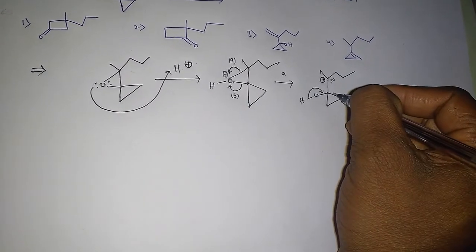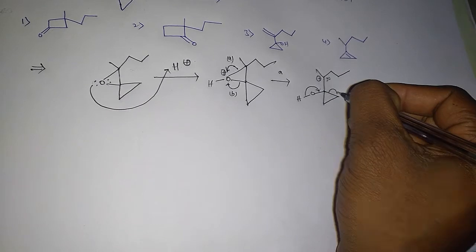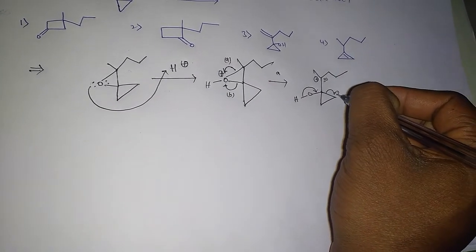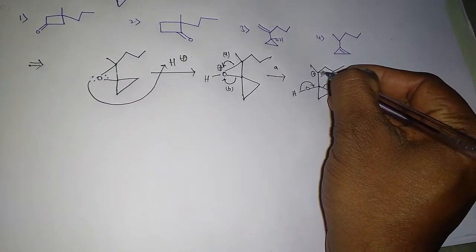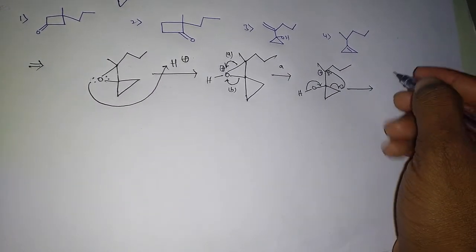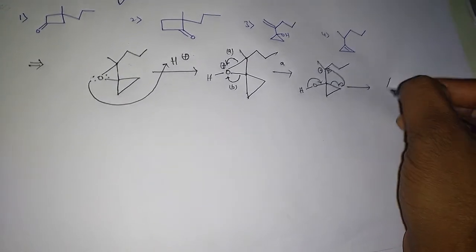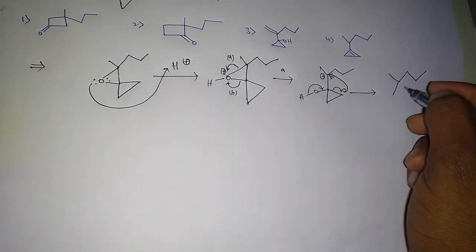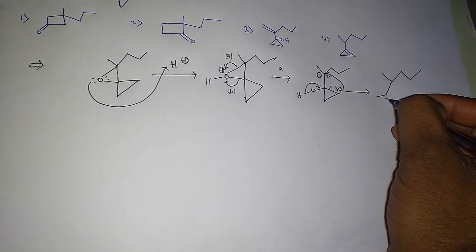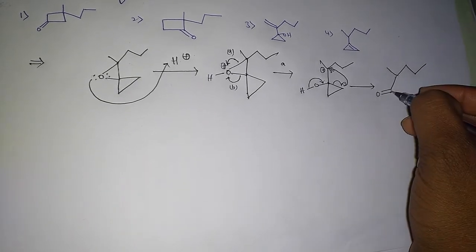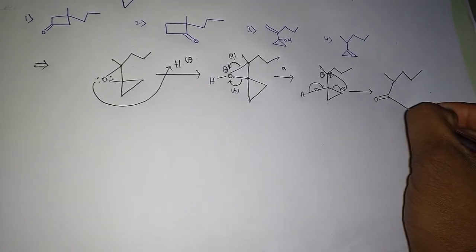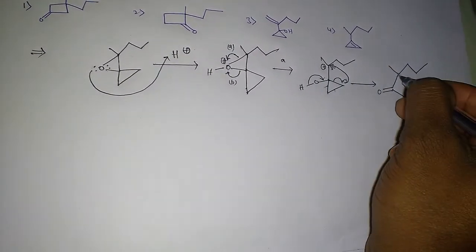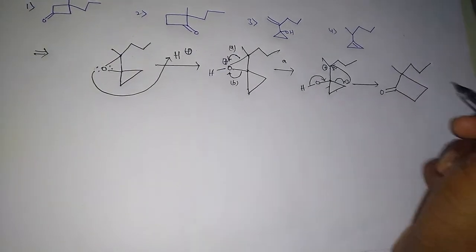Then this bond comes here. That means this negative charge on attacking this tertiary carbocation. So double bond OH, and then one bond, next another one, and newly formed bond here. So this is the product.